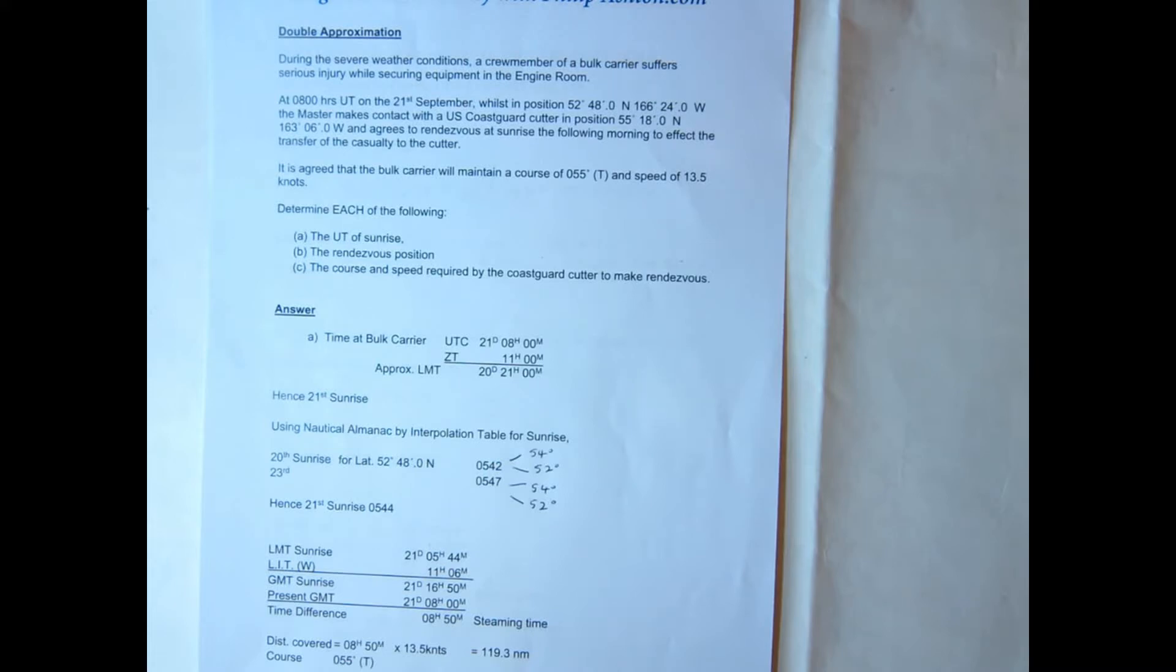Okay, so first of all we need to establish which sunrise. So universal time on the bulk carrier is 0800 given that. Let's apply zone time, in other words the longitude, and that's 11 hours. So the approximate LMT would be the 20th at 2100. So that tells us that the first sunrise after the 20th at 2100 will of course be the 21st.